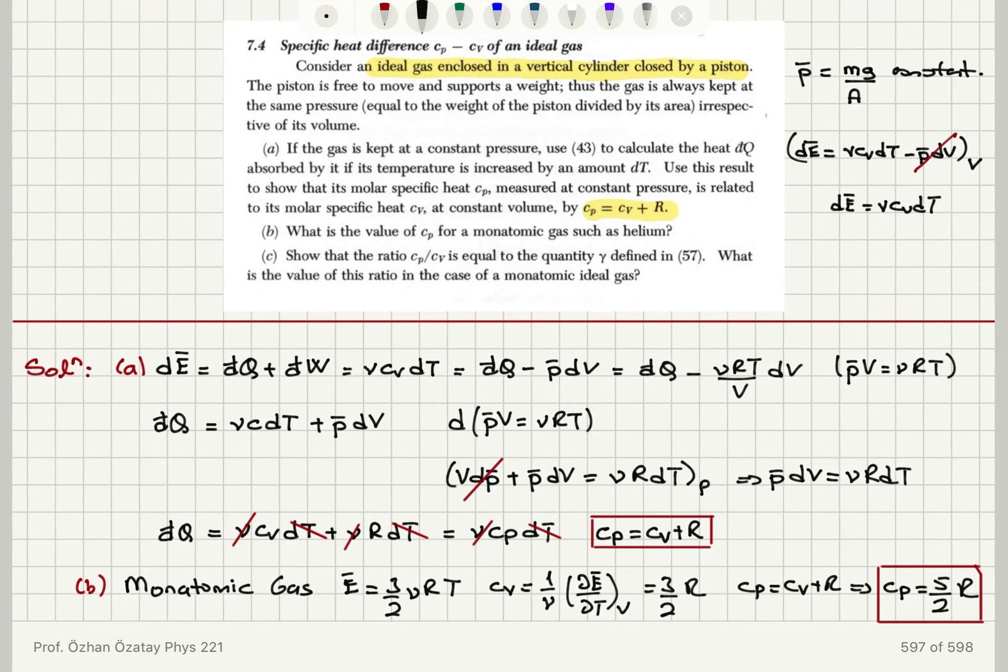Even for the constant pressure process, I can obtain nu cv dt amount of internal energy change. In which case, I will have d bar q minus p bar dV. And for p bar dV, I write the differential form of ideal gas law v d bar dP bar plus p bar dV. Since the pressure is constant, p bar dV is nu r dt. Also, nu is constant. The number of moles is constant. R is already universal gas constant. So I substitute for p bar dV nu r dt and I find cp is equal to cv plus r.